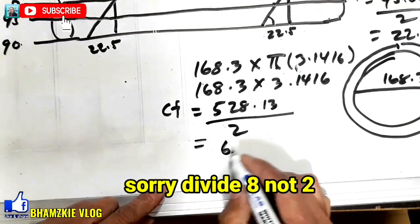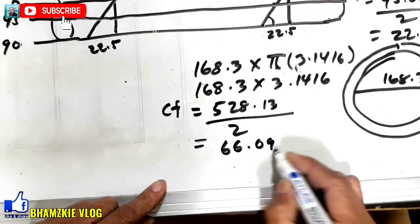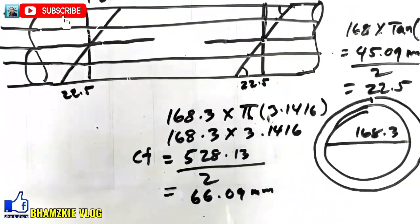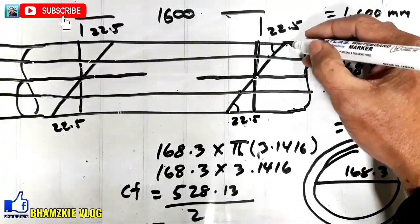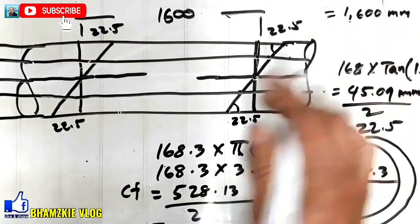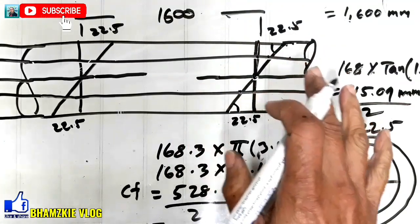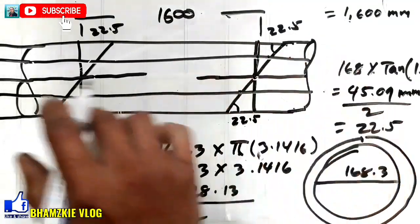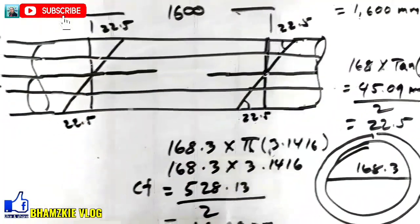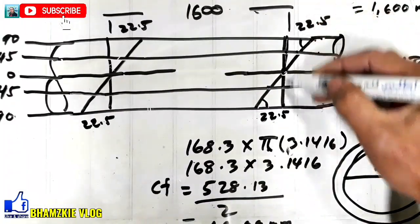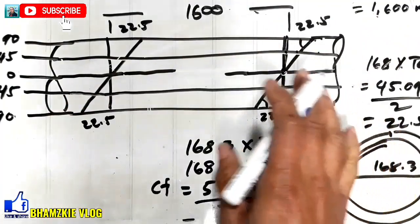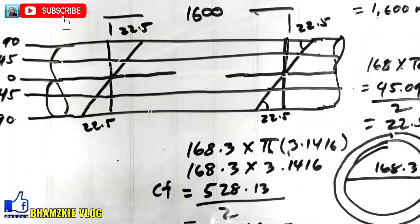Answer nyan is 66.09 mm. So, yung bawat distance dito ng inyong mga line is 66.09. Sa walong division. So, ngayon, lilinyaan nyo yan. Lagyan nyo ng markings. At saka itong importante itong ating wrap around dito para makuha natin yung tamang measurement at meron tayong reference.